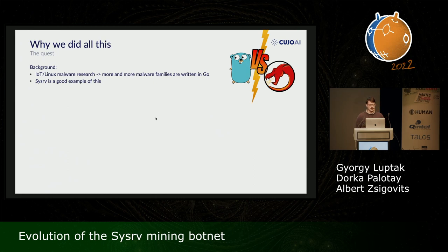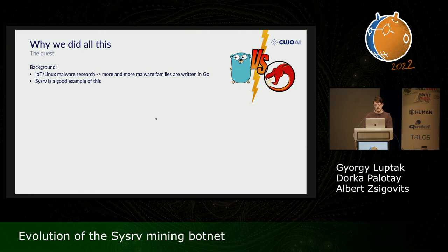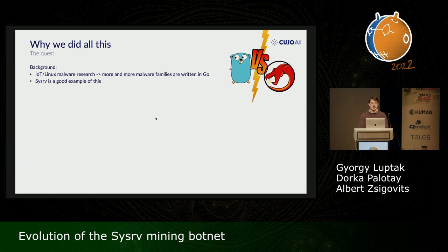A little background about why we did this research. At the threat intel team at Kujo AI, we are focusing mainly on IoT and Linux malware research, mainly because Unix-like operating systems nowadays can be as promising a target as a Windows endpoint, because there are an increasing number of servers that use some Unix-like operating system because of their reliability and operability. And also there are a lot of IoT devices that run some Unix-like operating system.